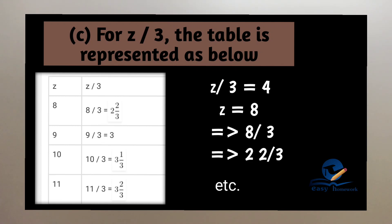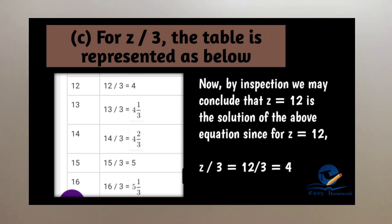The value of Z is 8, so Z by 3 is 8 by 3. Then 9 by 3 is 3. Z is 10, then 10 by 3. Z is 11, then 11 by 3 is 3 and 2 by 3. Z is 12, then 12 by 3 is 4. Next 13, 13 by 3 is 4 and 1 by 3. Then 14, 14 by 3 is 4 and 2 by 3. Then 15, 15 by 3 is 5.